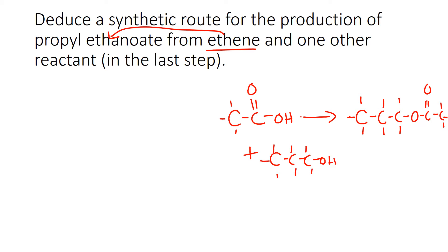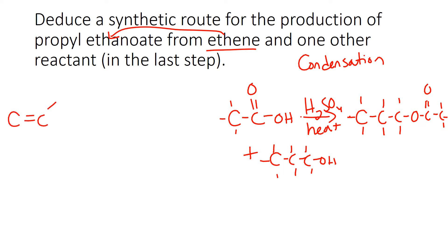The conditions for this last step: you need sulfuric acid, gentle heat, and this is a condensation reaction. Now I started with ethene and somehow got from ethene to ethanoic acid. This is going to be really similar to the last one in that we're going to have an oxidation step. The step that leads to ethanoic acid is an oxidation under reflux, because we're getting to the carboxylic acid.